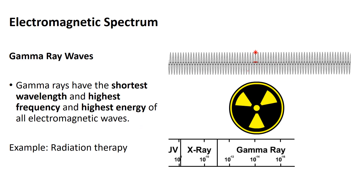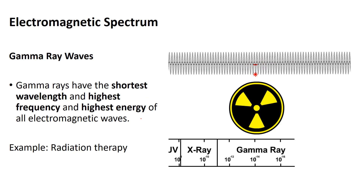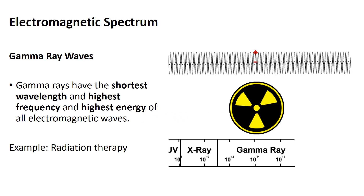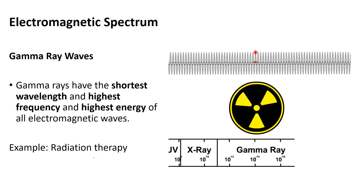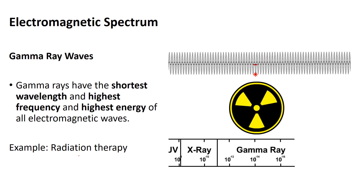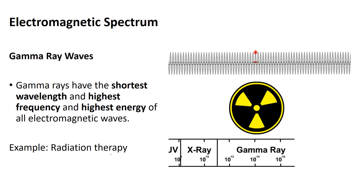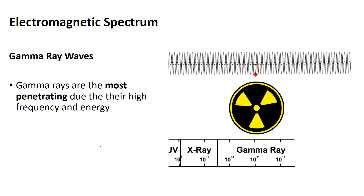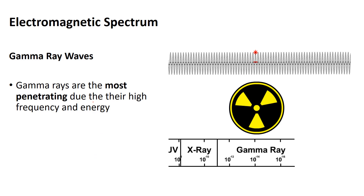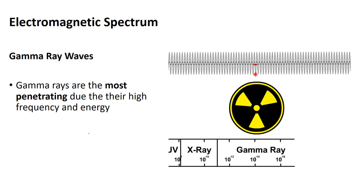Gamma rays have tons of energy — they're the shortest wavelength, highest frequency, highest energy, and get more penetrating and dangerous. Because they're dangerous for new cells, they're used in radiation therapy, which is more likely to kill new cancer cells than your regular cells. However, side effects occur since hair follicles are always growing new cells, and those can die — that's why some people lose hair during radiation therapy. Gamma rays are the most penetrating due to their high energy and frequency.